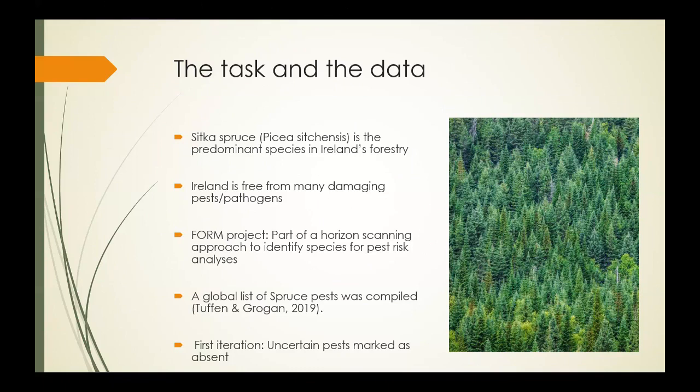Specifically, to complement the identification of the highest risk pests for full-blown pest risk analysis to be carried out by Melanie. A global list of spruce pests was compiled by Melanie and identified over a thousand pests and potential pests of spruce. Within this list, the distribution of some pests was marked as uncertain if they fulfilled certain criteria. For example, if a species had been recorded in Ireland before but there had been no records within the last 30 years, it was recorded as uncertain.